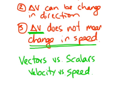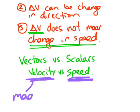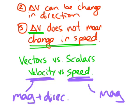A constant speed can be occurring at the same time that there is a change in velocity, because velocity, being a vector quantity, is magnitude and direction — but speed is just a magnitude.